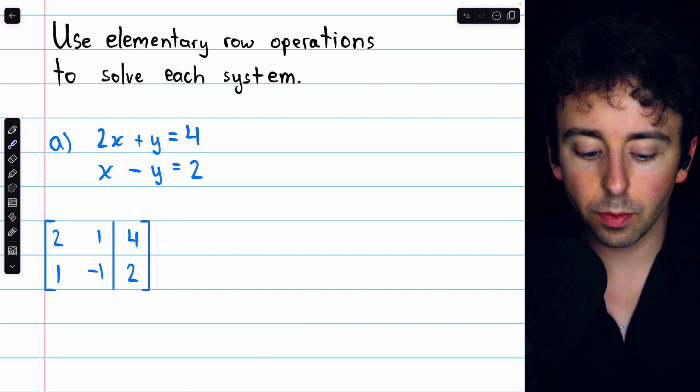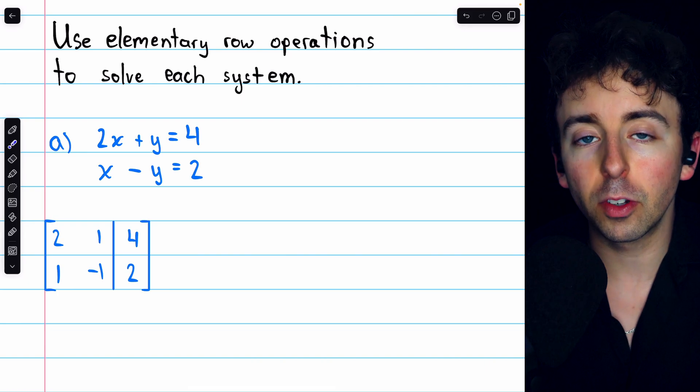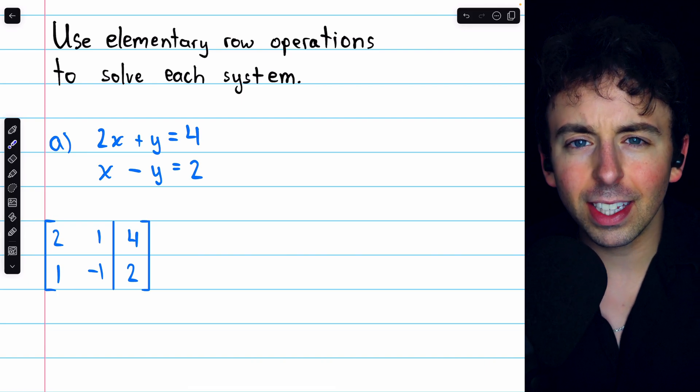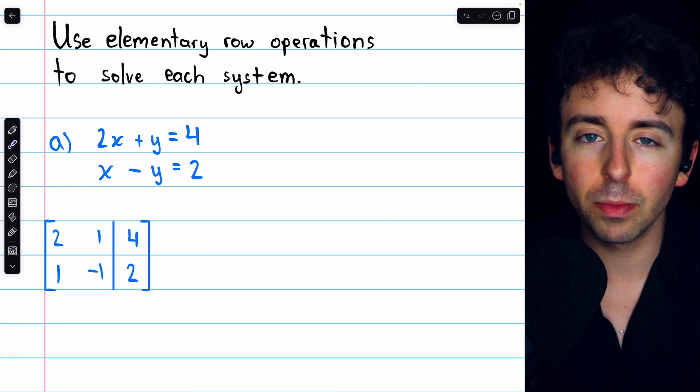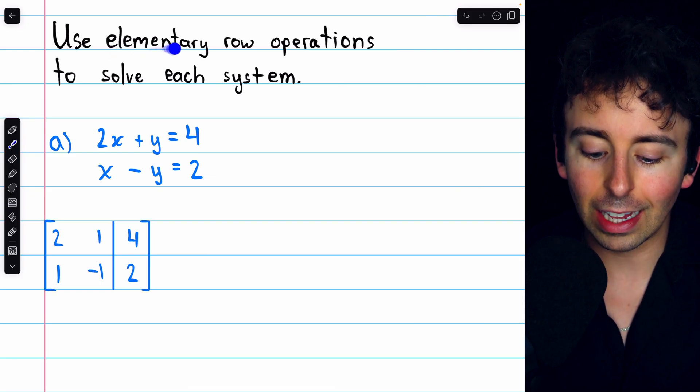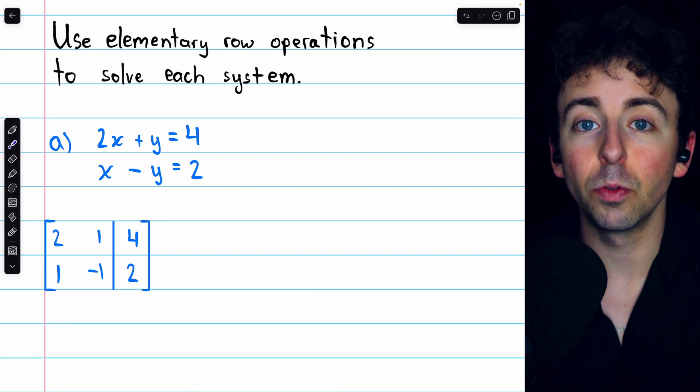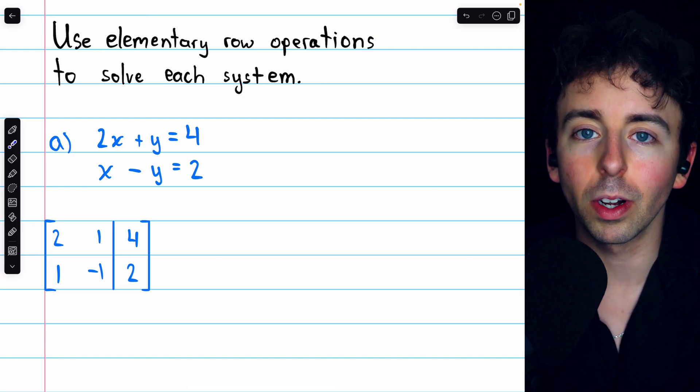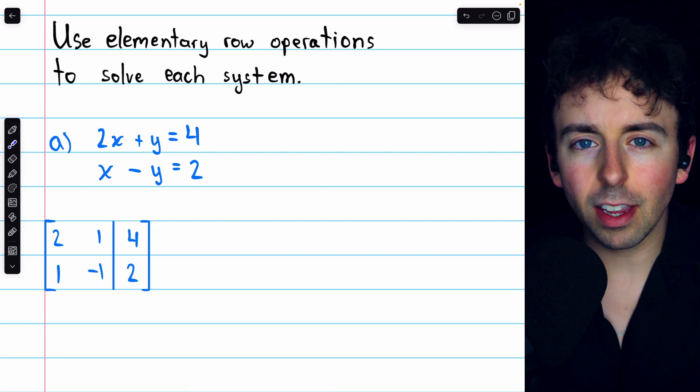We're going to do three examples of using elementary row operations to solve a system of two equations in two variables. We're basically using Gauss-Jordan or Gaussian elimination in these problems, but I'm saying just elementary row operations because we're technically not going to have to fully complete the process of Gaussian or Gauss-Jordan elimination to solve these problems. It's a little bit easier than that.